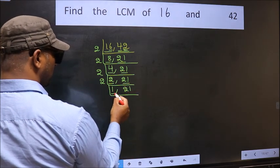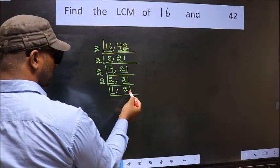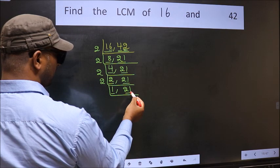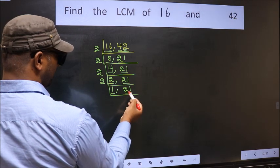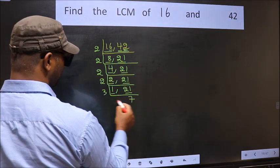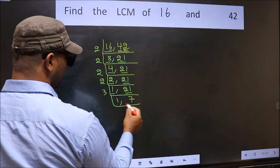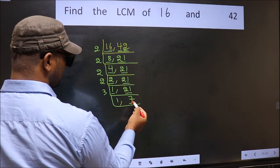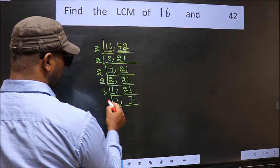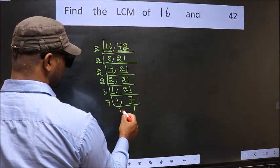We got 1 here. So focus on the other number 21. 21 is 3 times 7 is 21. Now we have 7 here. 7 is a prime number, so 7 times 1 is 7.